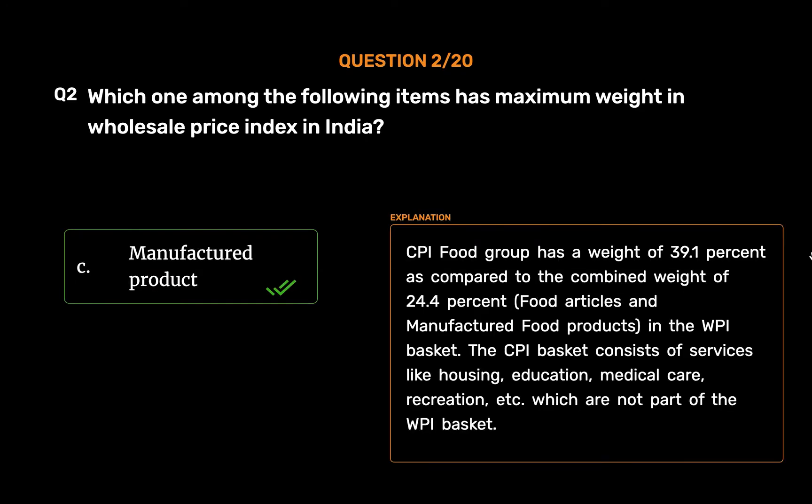The CPI Food Group has a weight of 39.1% as compared to the combined weight of 24.4% for Food Articles and Manufactured Food Products in the WPI Basket. The CPI Basket consists of services like housing, education, medical care, recreation, etc., which are not part of the WPI Basket.